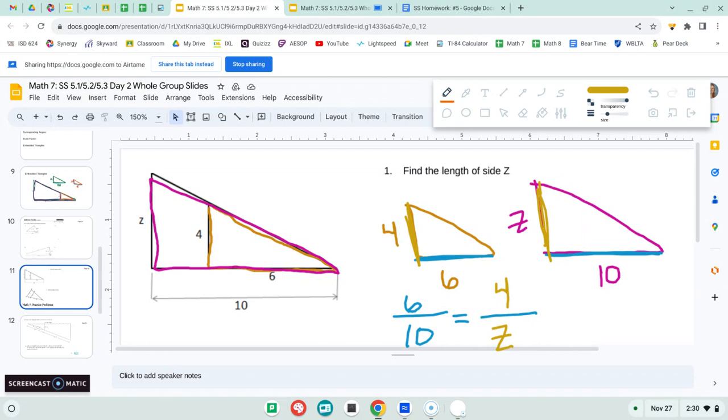So after we cross multiply 10 times four divided by six, that's not really a great number, but Z ends up being 6.67 approximately.